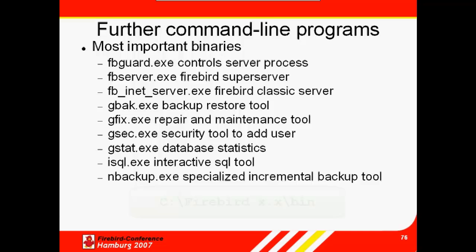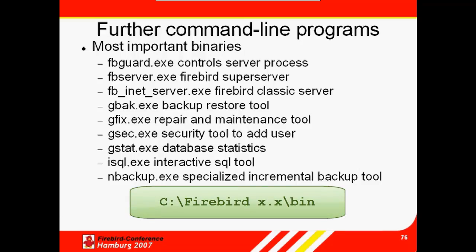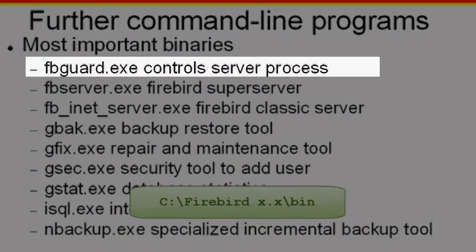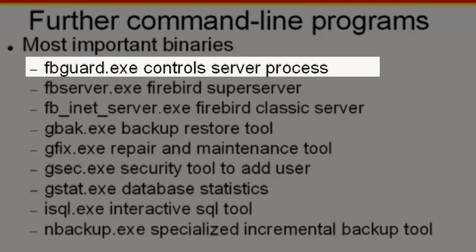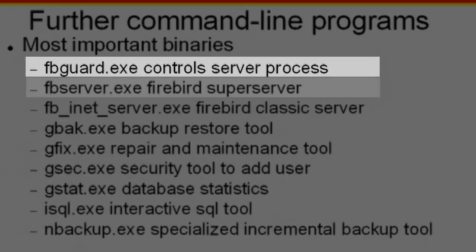The most important Firebird binaries can all be found in the Firebird bin directory. FB Guard is the Guardian and monitors the server process. Should the server go down for whatever reason, the Guardian automatically restarts it. This can be replaced by Windows if wished, although if the Firebird service goes down it means something has gone wrong and you may want to first investigate why by studying the log file. If you automatically restart the server, by the time you've found the problem the database has moved on. It's better to decide straight away upon discovering the problem how to proceed with the database, whether to regress or what action to take.